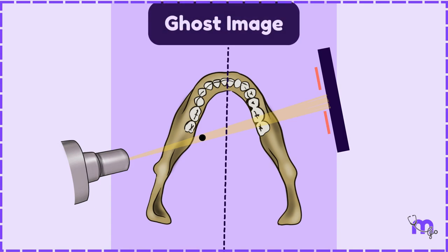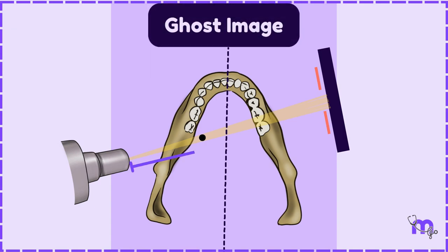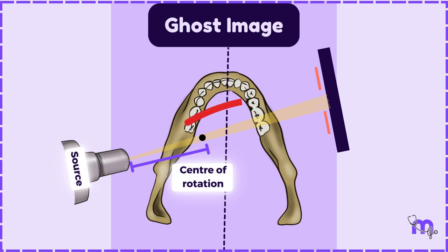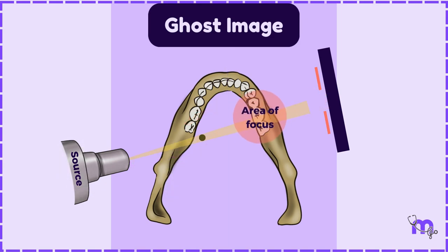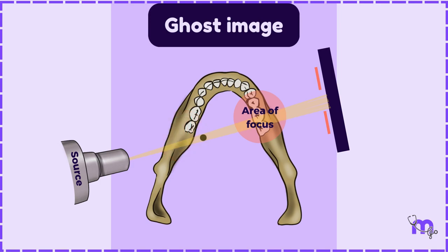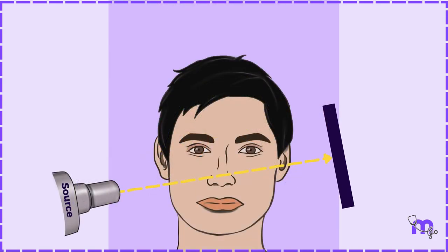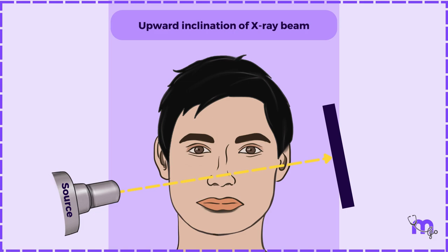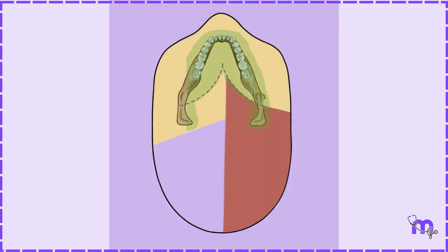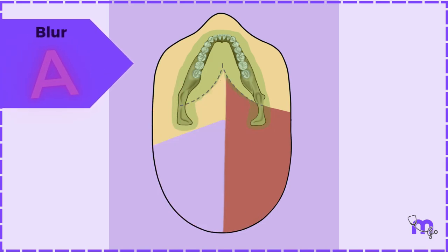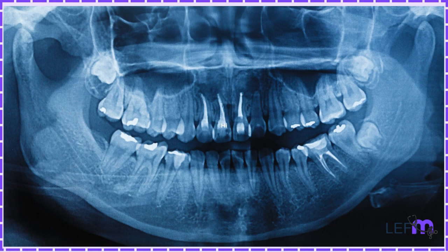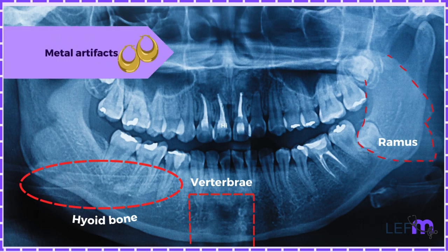Let us now move on to ghost images. These images are produced by objects between the center of rotation and the X-ray source. They appear on the opposite side of their true anatomic location. This occurs because when the X-ray source focuses on the opposite side of the mandible, some X-rays pass through the mandible on the same side as the source, and that part appears magnified on the contralateral side of the image. It is also seen at a higher level because of the upward inclination of the X-ray beam. Structures that form ghost images include the hyoid bone, vertebrae, ramus of the mandible, and metal artifacts like earrings.